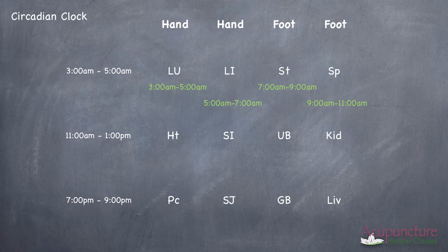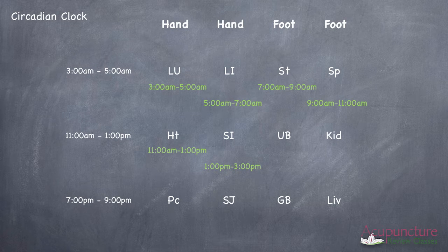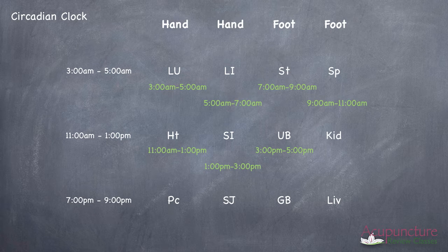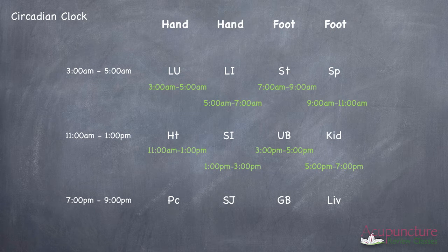What happens if they ask you a question on what's the time for the kidney? So instead of you starting at the lung, you can start at the heart. So the heart has 11 AM to 1 PM. So where's the kidney? Okay, so the heart is 11 to 1, the SI is 1 to 3, the UB is 3 to 5, and the kidney is 5 to 7. So now it's an easy way for you to find the kidney.